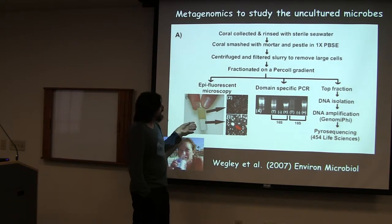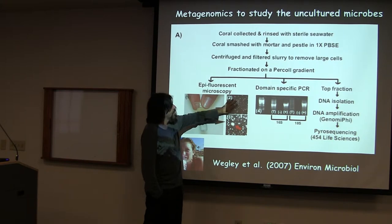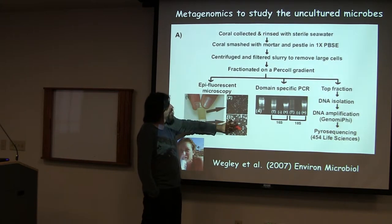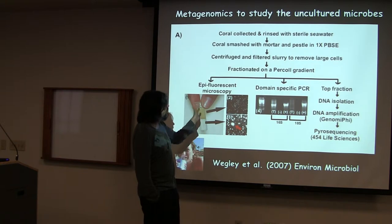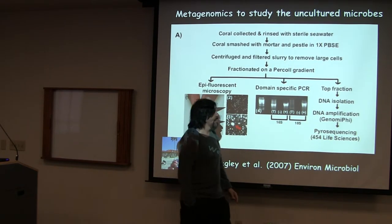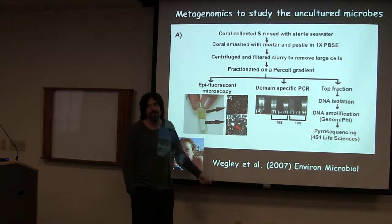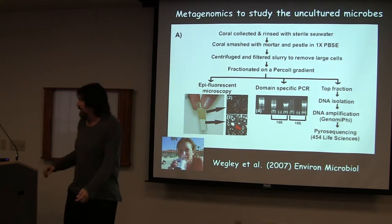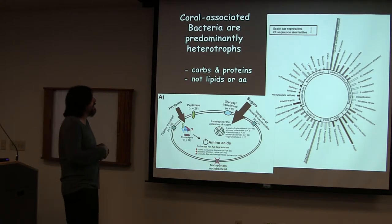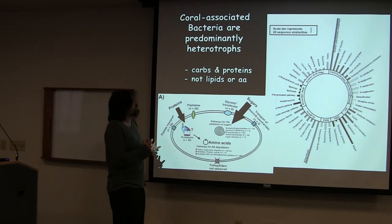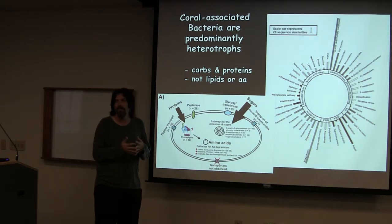Linda did the same thing and ended up with two fractions — effectively your microbiome with your viruses, and your eukaryotic cells. It's not a perfect technique but it's pretty good. She took that DNA — this was genomic, back in the early days of pyrosequencing, so these were 100 base pair fragments. What she found, not surprisingly, is that the coral-associated bacteria are primarily heterotrophs — just things sitting there eating the mucus.